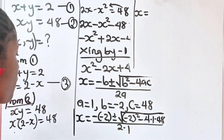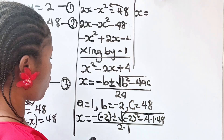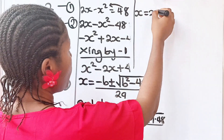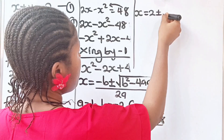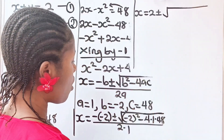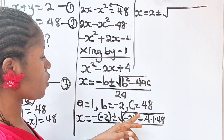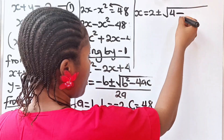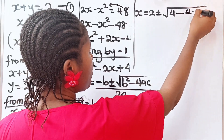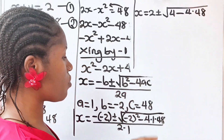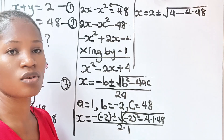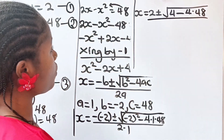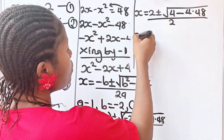Simplifying: minus minus gives plus, so we have x equals 2 plus or minus the square root of minus 2 squared, which is 4, minus 4 multiplied by 48, divided by 2.